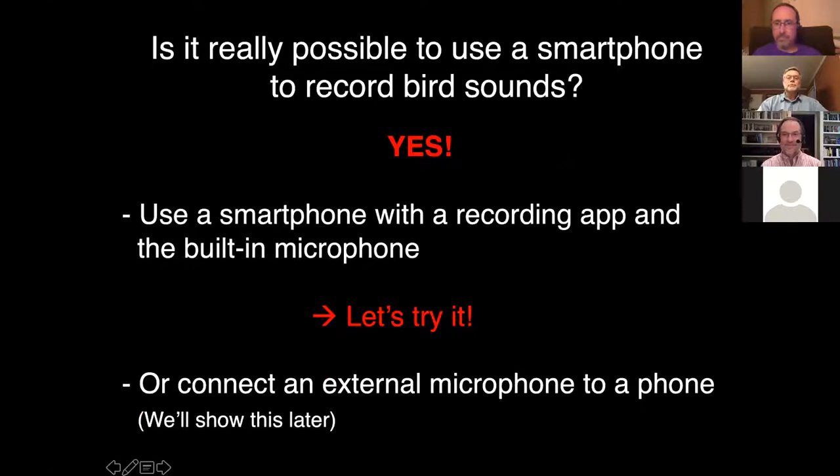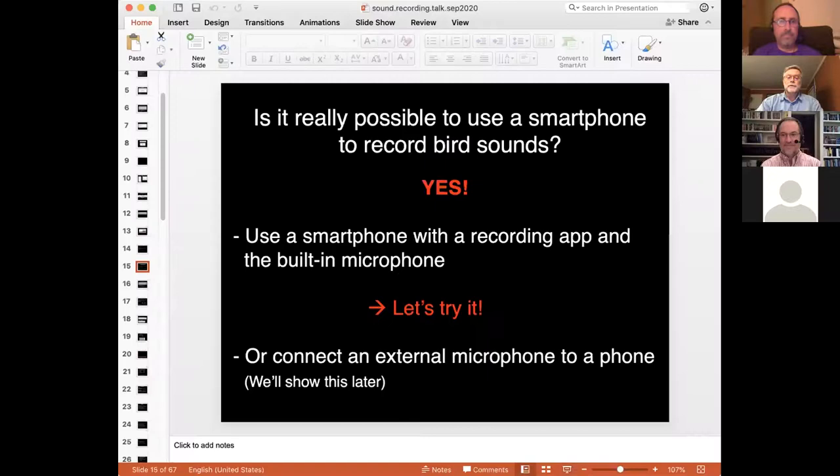Is it really possible to use a smartphone to get a decent recording? Yes. Demonstrated live using an iPhone 8 Plus: the built-in Voice Memo app is simply opened, the red record button pressed, and it starts recording — you can see the amplitude vary in real time. Then hit the red button again to stop. The recording can be transferred to a computer via email, AirDrop, or Dropbox.